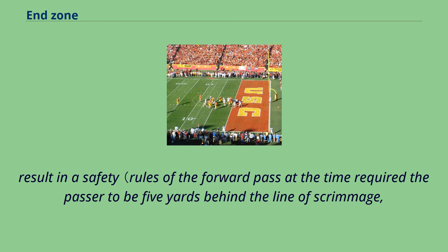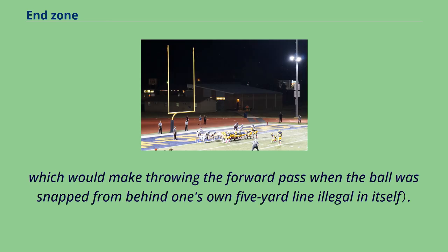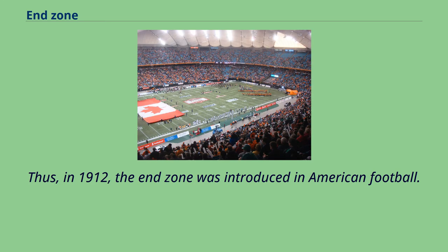Rules of the forward pass at the time required the passer to be 5 yards behind the line of scrimmage, which would make throwing the forward pass when the ball was snapped from behind one's own 5-yard line illegal in itself. Thus, in 1912, the end zone was introduced in American football.